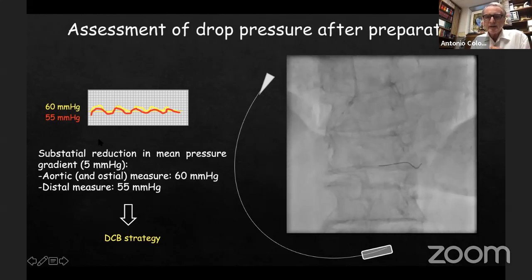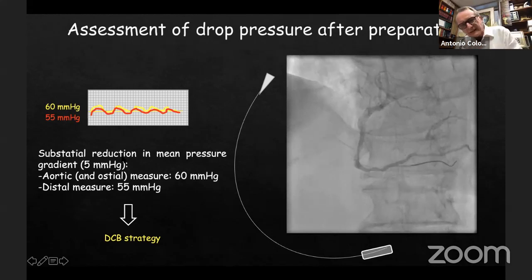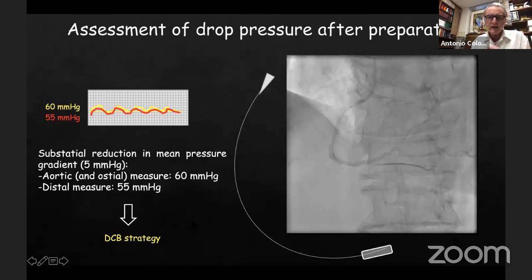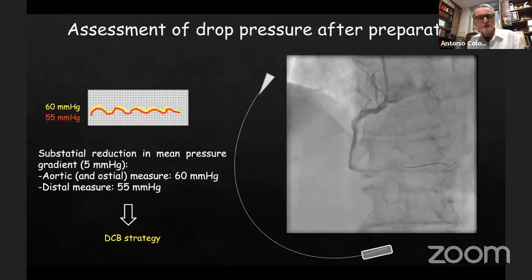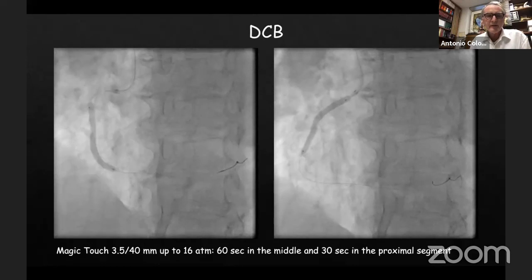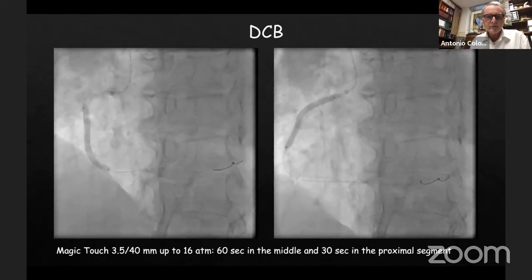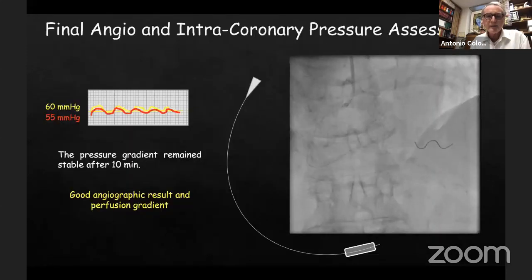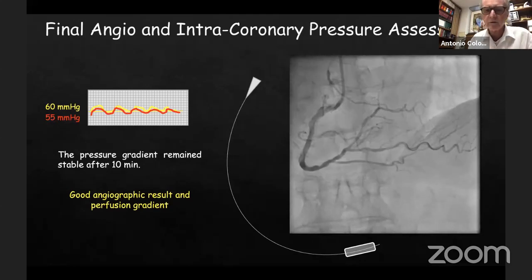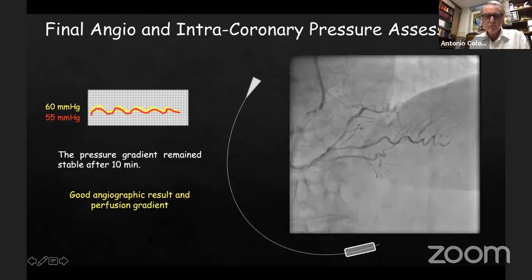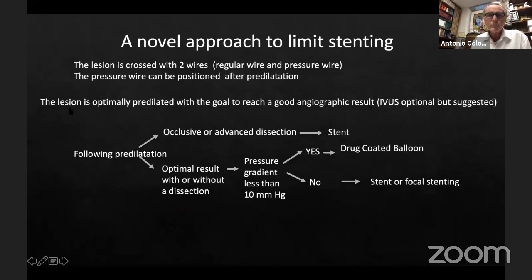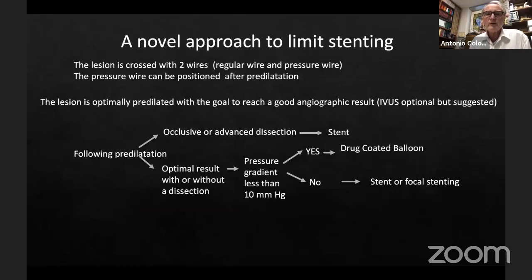We did not mean to seal the dissection — basically just to make the lumen larger. After multiple dilatations, we remeasured the pressure proximally and distally. Proximally it was still 60, but distally went from 25 to 55, with a residual 5 mmHg gradient. Based on this finding, we did not place any stent — not even proximally. We finalized with a drug-coated balloon distally and proximally. We repeated the pressure after the drug-coated balloon, which again showed a 5 mmHg gradient and no stenting.